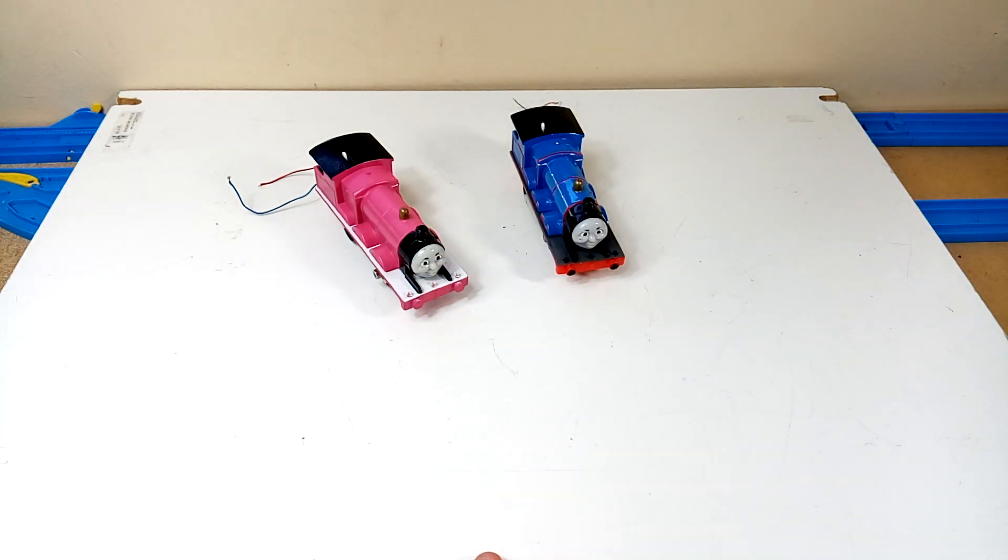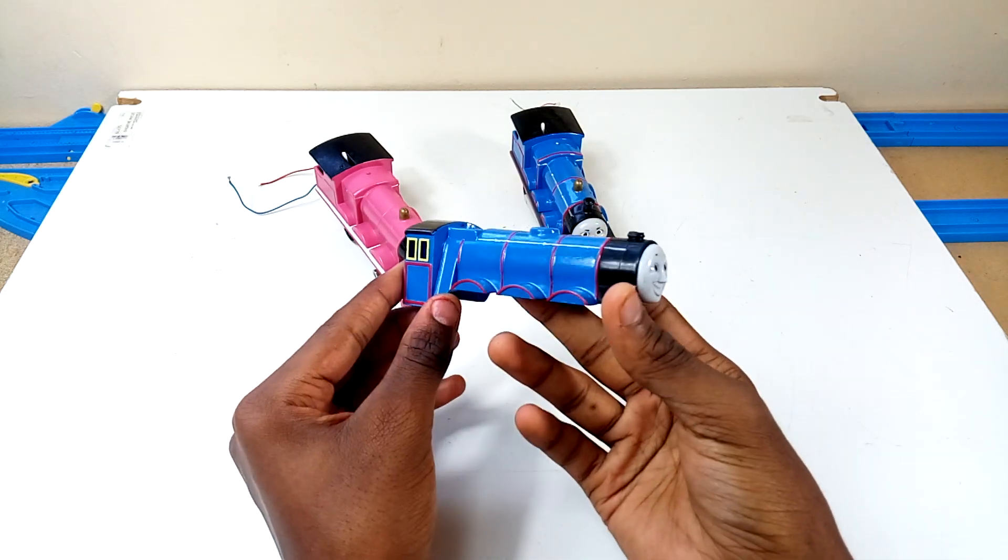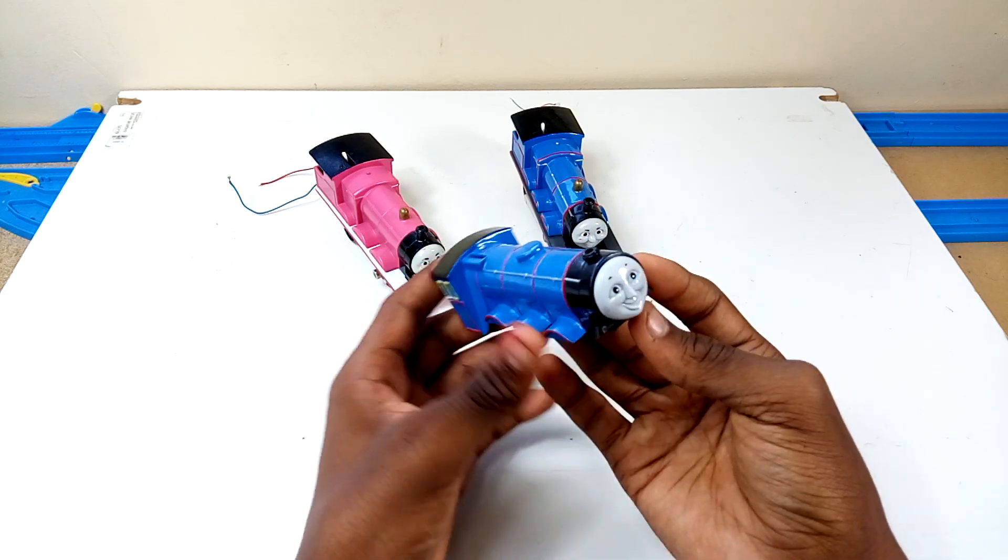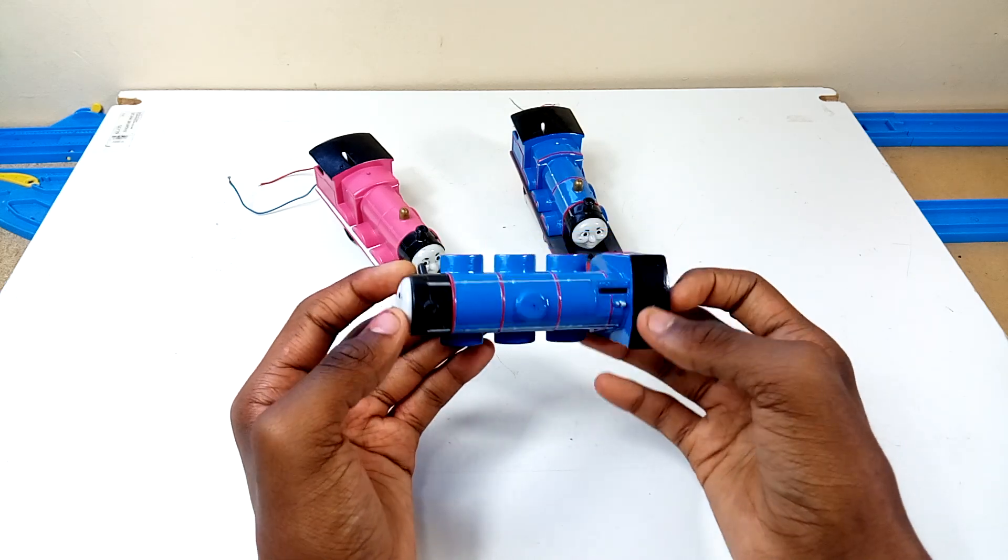And then I'm also working on a custom blue old shaped Henry. And I'm waiting on the running board. I have the tender and I have the wheels, so I'm just waiting on the running board now.